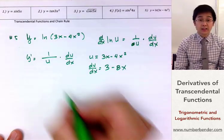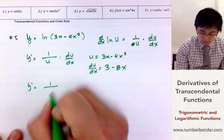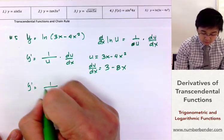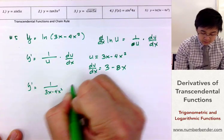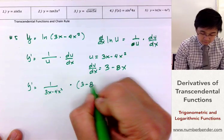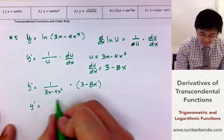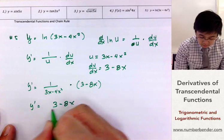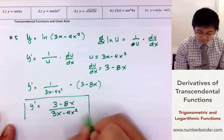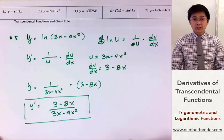Plugging into the derivative formula, y prime is 1 over (3x minus 4x squared) times (3 minus 8x). We can rewrite this as 3 minus 8x all over 3x minus 4x squared. This is how we find the derivative of transcendental functions using the chain rule.